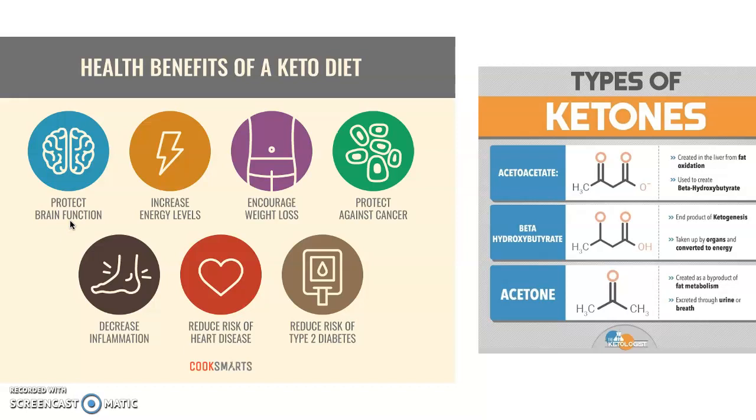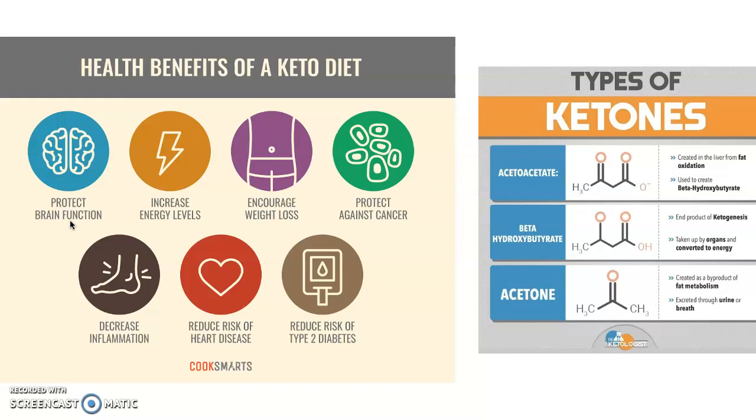There's three different ketones the liver makes. Acetone is just fingernail polish and it's breathed off, but acetoacetate can convert to beta-hydroxybutyrate, and beta-hydroxybutyrate is what our body can use as an energy source.